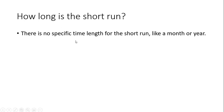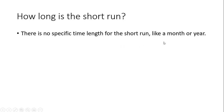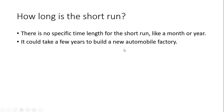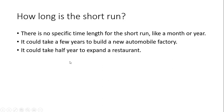So how long is the short run? There's no specific time length for the short run, like a month, or a half a year, or a year. It could take a few years, for example, to build a new automobile factory, but it could maybe just take a half a year to expand a restaurant. So we can't put a specific time length on the short run. All we're going to say is the short run is a period of time in which at least one of the firm's inputs, namely capital, is fixed. Or another way of thinking about it is that the firm's scale of operations is fixed in the short run. In the long run, the firm can choose to be any size that it desires — it can increase or even reduce its scale of operations.